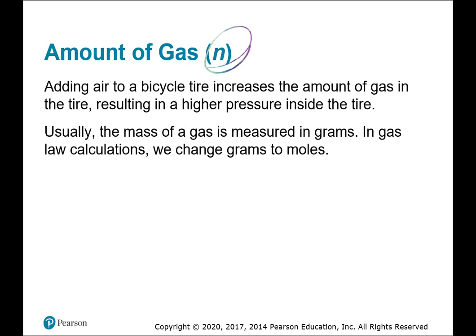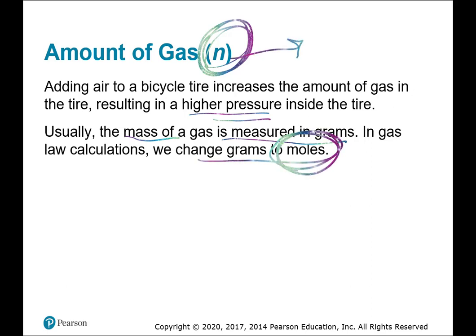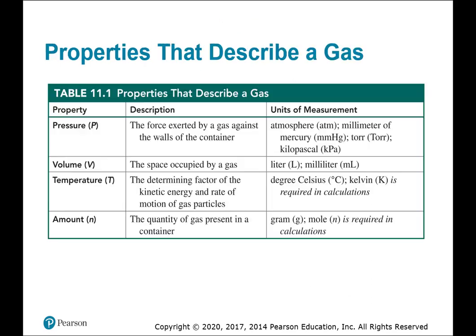The amount of gas, which we refer to as n — adding air to a bicycle tire increases the amount of gas in the tire, resulting in higher pressure inside. Usually the mass of a gas is measured in grams, but in gas law calculations we change grams to moles. So n tells us how many moles of gas we have.